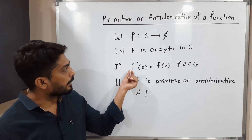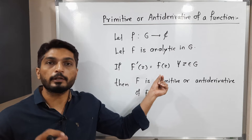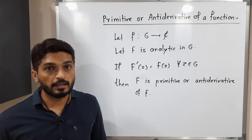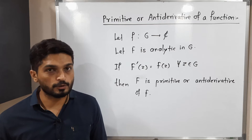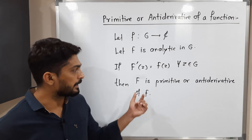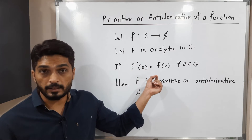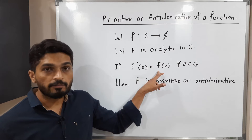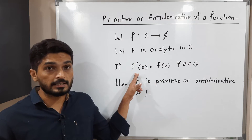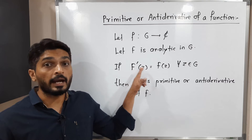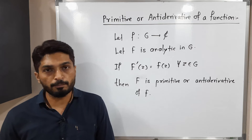When the derivative of capital F is small f, we say small f is the derivative of capital F. Conversely, we say capital F is the anti-derivative of small f. An anti-derivative is nothing but a primitive. So this is the definition of anti-derivative or primitive.